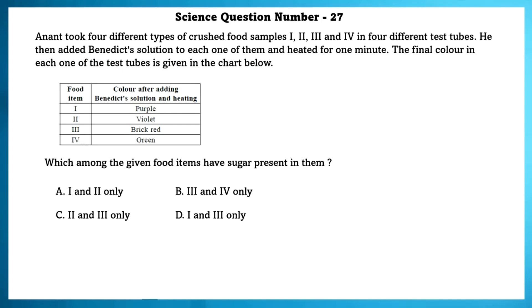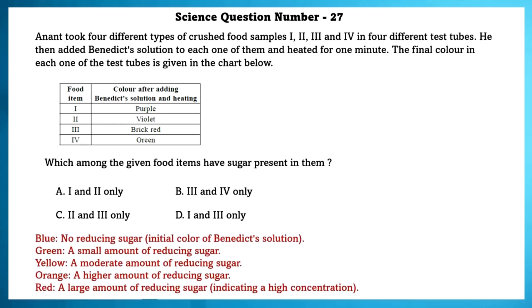Science question number 27. Anant took 4 types of crushed food samples 1, 2, 3 and 4 in 4 different test tubes. He then added Benedict's solution to each of them and heated them for a minute. The final color in each of the test tube is given in the chart below. Which among the given food items have sugar present in them? If the color turns green, a small amount of reducing sugar is there and if it turns red, a large amount of reducing sugar indicating high concentration is present. So, the B option is the correct option.